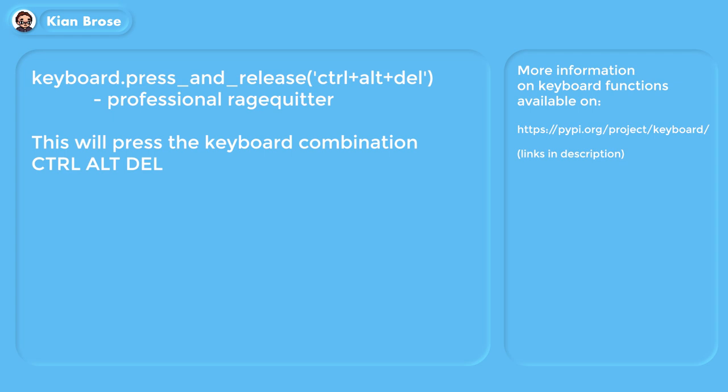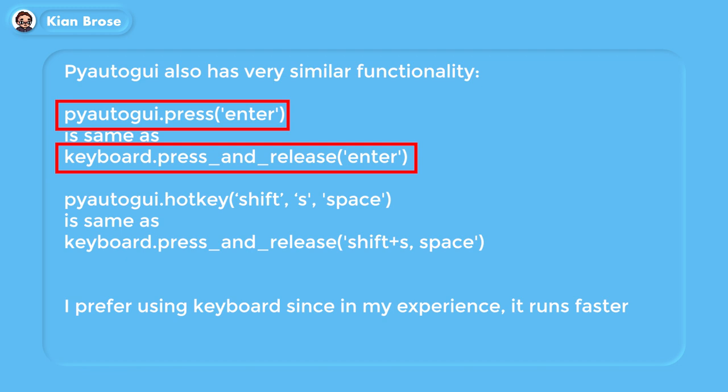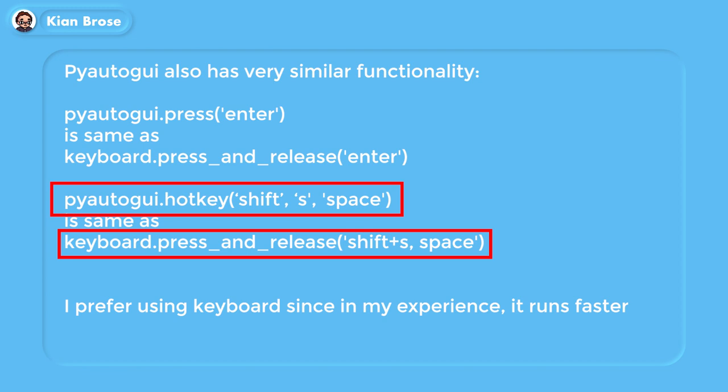Additionally, if you want to do keyboard combinations you can use this code — as you can see it works with multiple keys. PyAutoGUI also has very similar keyboard functionality; for example, this is the same as this, and this is the same as this. You can choose whatever you like, but I prefer the keyboard library since in my experience it runs faster.